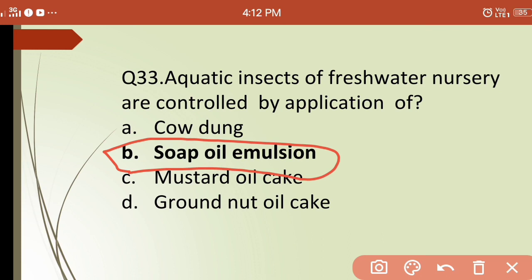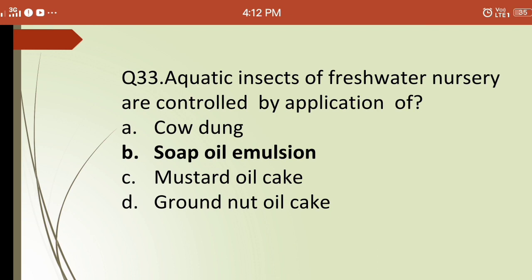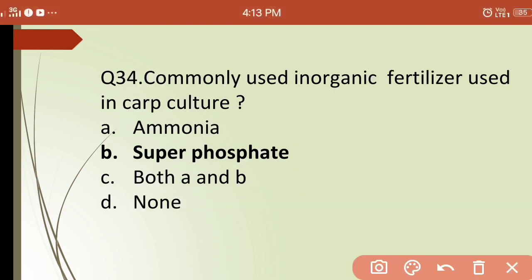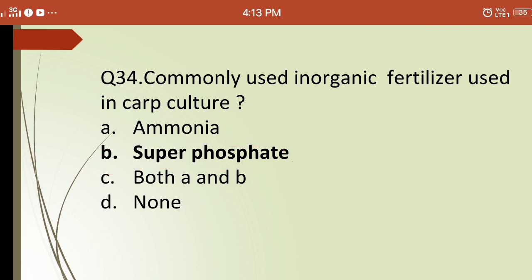Thirty-fourth question: which is the commonly used inorganic fertilizer in carp culture? Options are: (a) ammonia, (b) superphosphate, (c) both, (d) none. The correct answer is (b) superphosphate — superphosphate is the commonly used inorganic fertilizer in carp culture.